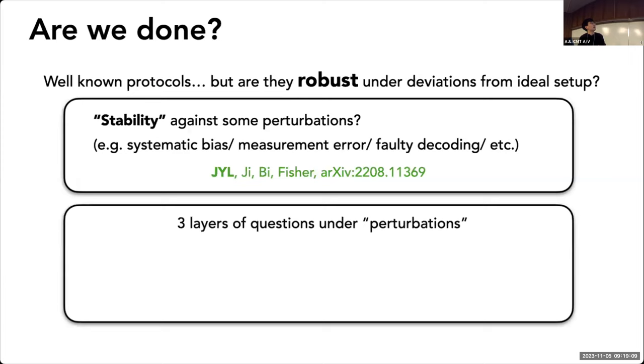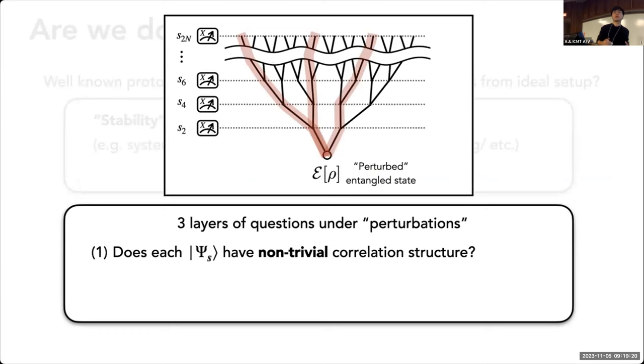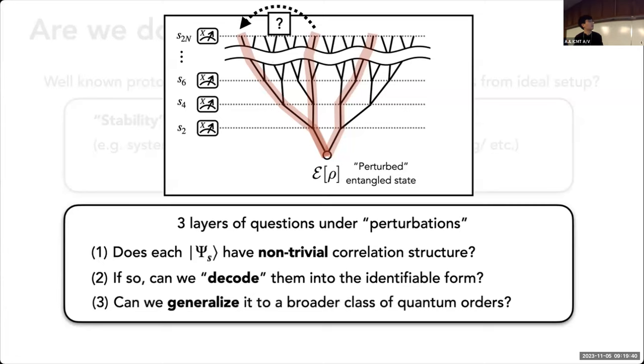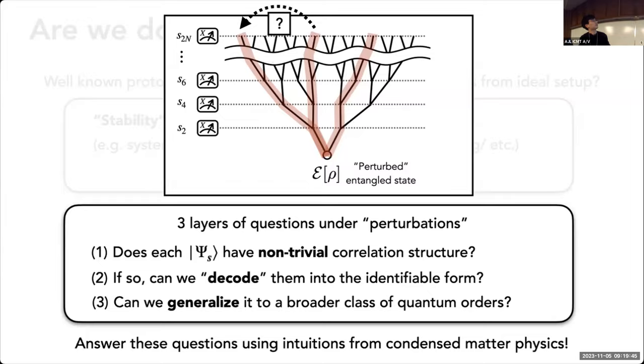The original question was whether this protocol is stable against perturbations. There are three layers of questions to address this problem. First, whether each trajectory has non-trivial entanglement structure. Second, whether we can decode all different trajectories into a single consistent one, so from the observable side we can get interesting measurement outcomes and correlations without doing any post-selection. Finally, whether we can generalize this to a broader class of quantum codes.